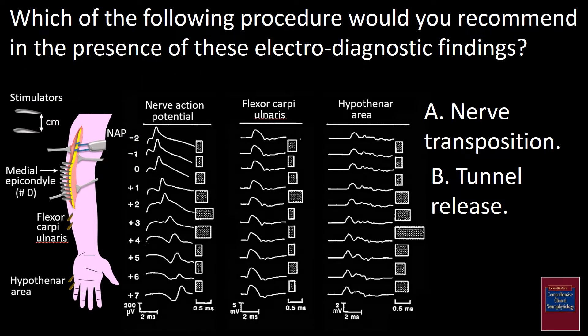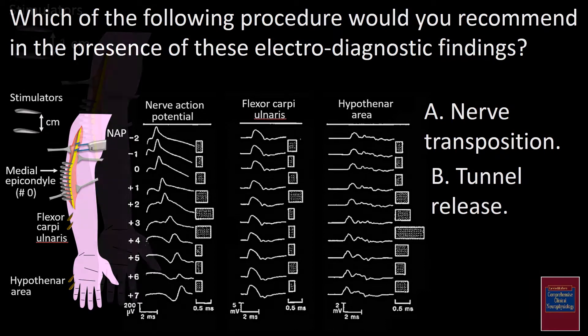Please read the next question carefully and look at the figure. In general, nerve transposition is a more aggressive surgery than tunnel release. Recording electrodes consisting of discs for surface recording or subcutaneous needles are placed on top of the flexor carpi ulnaris, with another set of electrodes from the hypothenar region.